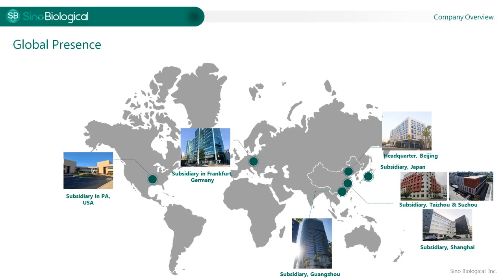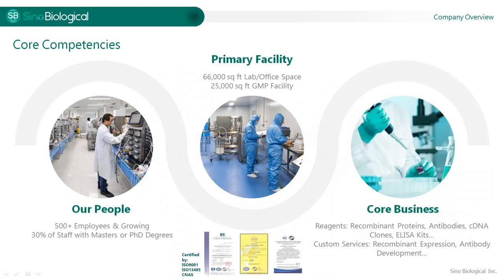To give a quick company overview, Sino is a biotech company that was established in 2007, and our headquarters is located in Beijing. We have several offices in mainland China, as well as offices in the Pennsylvania region of the United States and the Frankfurt region of Germany, which conduct our global business. We have over 500 employees and our facility has been expanding and certified by various international as well as domestic organizations.